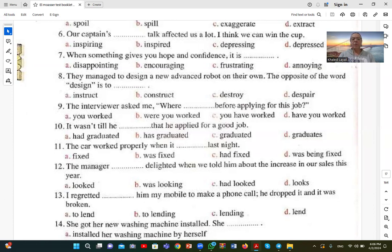Number twelve: The manager looked delighted when we told him about the increase in our sales this year. The manager looked delighted, showing happiness when he learned that we increased sales this year. 'Looked' is one of the verbs followed by an adjective, and 'delighted' (the third form) is also used as an adjective. So A, looked delighted, is the correct answer.